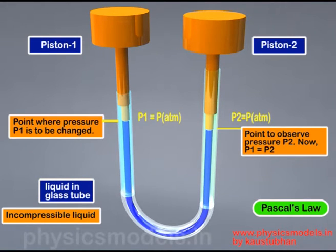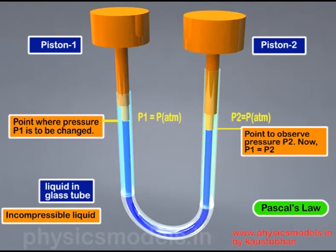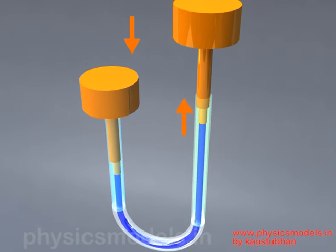Now let's look at a more complicated arrangement with two pistons. You have a U-tube, like a manometer. Fill in the liquid and it will occupy the same level on both arms. Place two pistons — one on the left, one on the right — and initially let atmospheric pressure act on them. Our interest is at two points: let the pressure be p1 on the left arm at the top of the liquid, and p2 at point two, with both points at the same height above our reference plane.